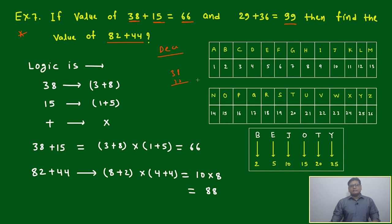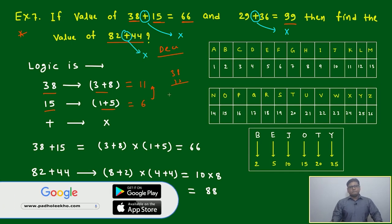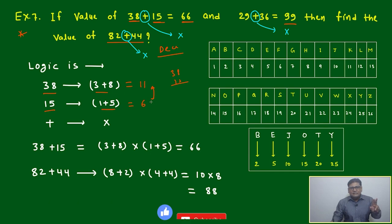They found the answer is 66 for 38 plus 15. Let's try to understand: 38, 3 plus 8 is 11. 15, 1 plus 5 is 6. We got the idea - the addition is replaced by multiplication. Here also this is replaced by multiplication, but it is not multiplication of 38 and 15, it is multiplication of 11 and 6.